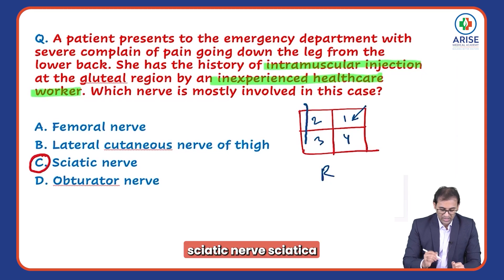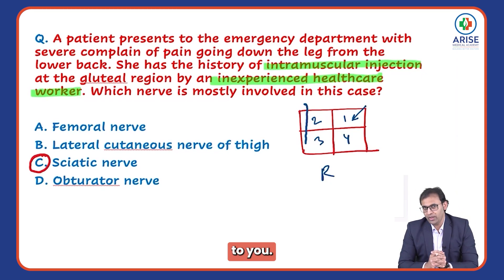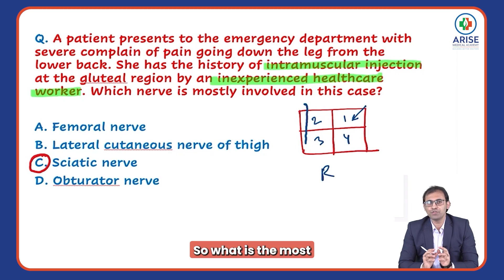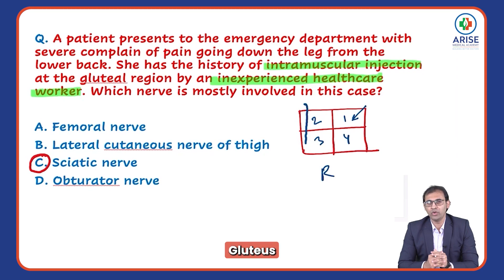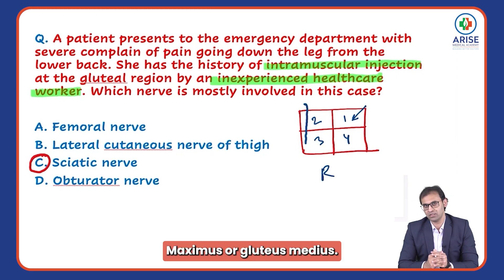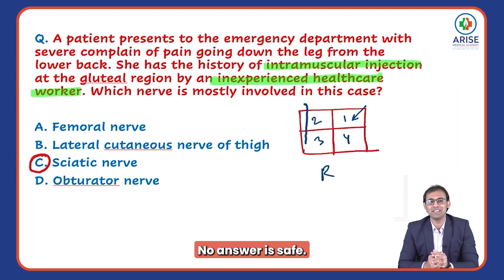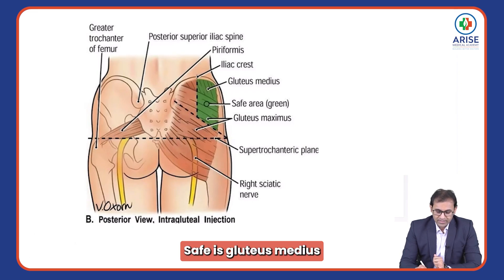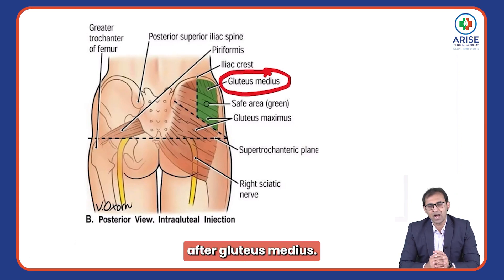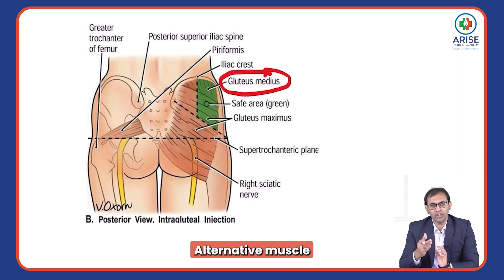Sciatic nerve injury causes sciatica. Next question: what is the most preferred muscle for intramuscular injection in the buttock — gluteus maximus or gluteus medius? You might think maximus since it is the largest, but the answer is gluteus medius, which is the safe muscle. After gluteus medius, the alternative muscle is the vastus lateralis on the lateral aspect of the thigh.